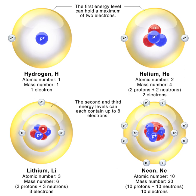Even though it is not a chemical element, the neutron is included in this table. The free neutron has a mass of 939,565,413.3 eV/c², or 1.674927471 × 10⁻²⁷ kg, or 1.00866491588 u. The neutron has a mean square radius of about 0.8 × 10⁻¹⁵ m, or 0.8 fm, and it is a spin-½ fermion. The neutron has no measurable electric charge. With its positive electric charge, the proton is directly influenced by electric fields, whereas the neutron is unaffected by electric fields.